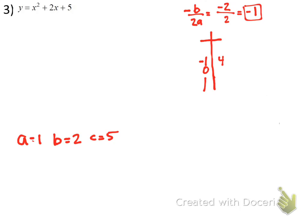Next, plug in 0: 0 squared is 0, 2 times 0 is 0, 0 plus 0 plus 5 is 5. Then plug in 1: 1 squared is 1, 2 times 1 is 2, 1 plus 2 is 3, plus 5 is 8. Now, on the opposite side of negative 1, we write negative 2 and negative 3. Copy the symmetrical values: negative 2 gets 5, and negative 3 gets 8. Quick check: plugging in negative 2 gives negative 2 squared equals 4, 2 times negative 2 is negative 4, so 4 minus 4 is 0, plus 5 is 5. Correct.